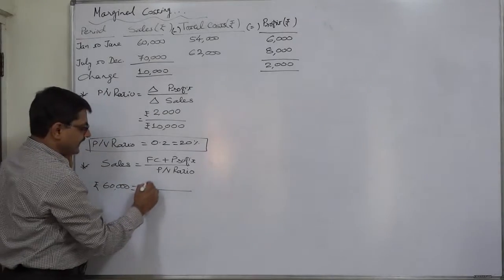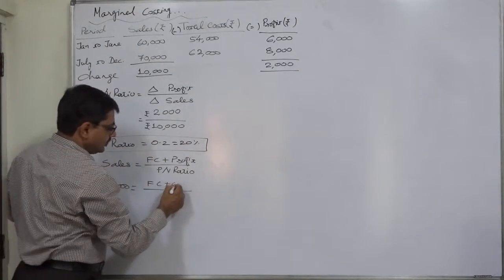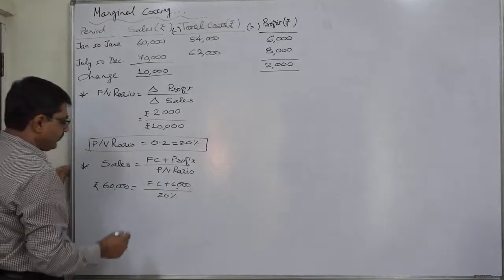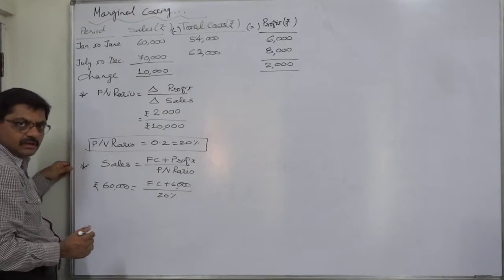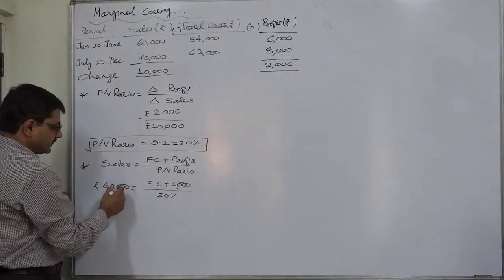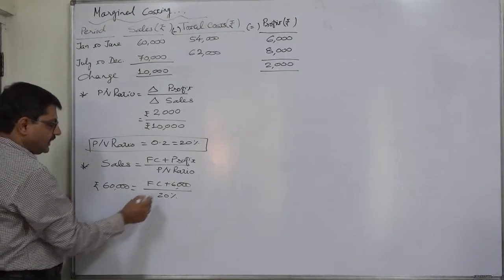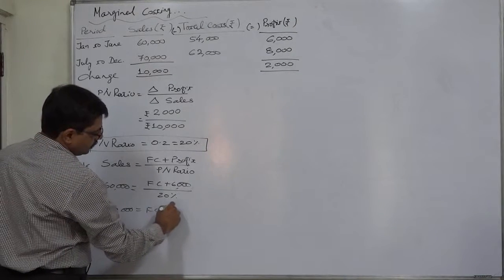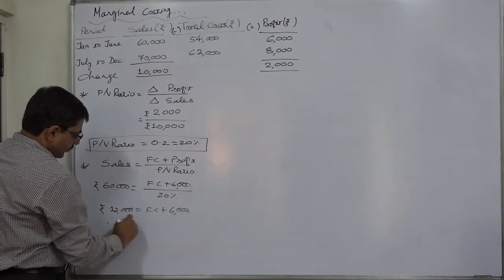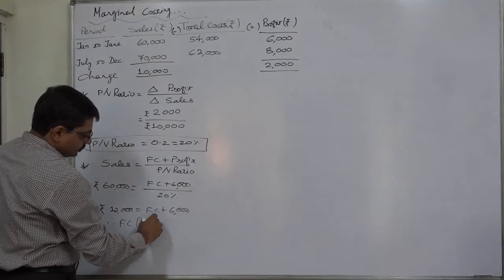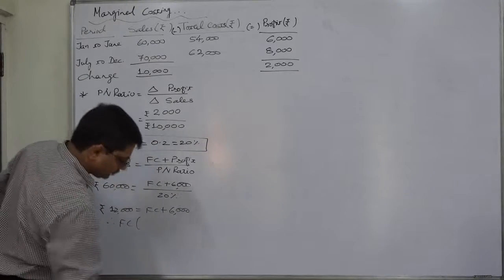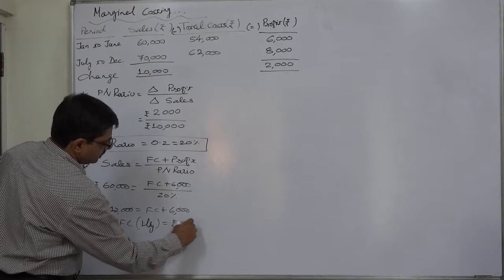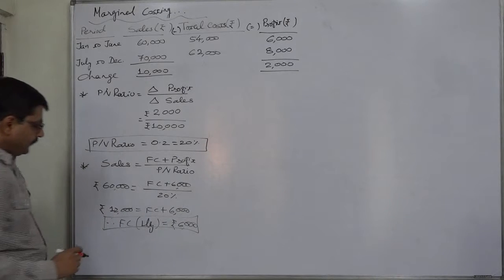We will take the pair of the first half: sales rupees 60,000. The fixed cost is missing; profit is 6,000 — we maintain this pair. PV ratio is 20%, so 20% of rupees 60,000 gives total contribution of rupees 12,000, which equals fixed cost plus profit of rupees 6,000. So the half-yearly fixed cost comes to rupees 6,000.